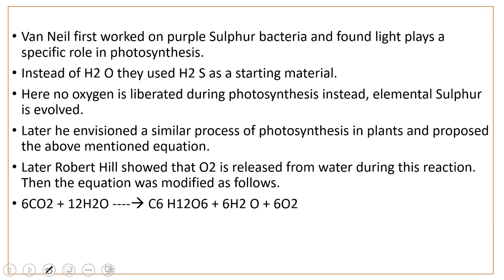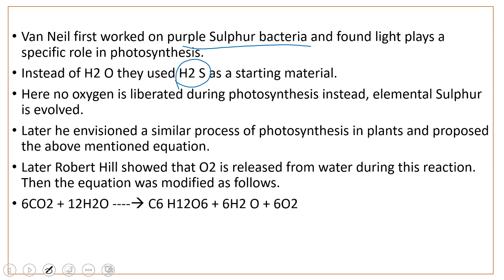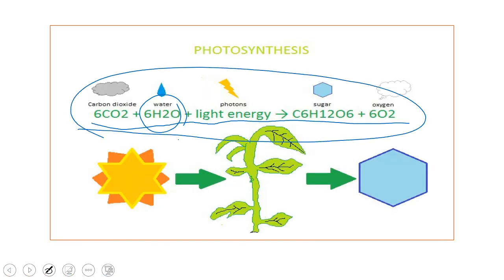Van Neel first worked on purple sulfur bacteria and found that sunlight plays a very specific role in photosynthesis. During photosynthesis, water is normally utilized, but C.B. Van Neel used hydrogen sulfide as a starting material instead of water. Because H₂S was used instead of water, sulfur is evolved instead of oxygen. If water is present, oxygen is liberated; but with hydrogen sulfide, sulfur is evolved. Later, he envisioned a similar process in plants and proposed the photosynthesis equation.